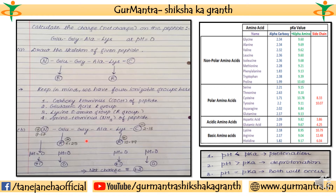Now, how much pH is given? The pH is zero — that is the given pH. I write everything step by step so that you can understand and make a good comparison. Now let us calculate the charge. When pH is less than pK, that leads to protonation. This is explained in the basic part. Since pH zero is less than all the pK values here, all groups will undergo protonation.